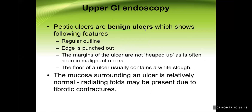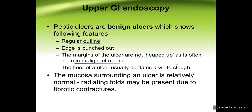Features of a benign peptic ulcer on endoscopy: regular smooth outline, punched-out edge, margins not heaped-up as in malignant ulcer, and a white slough on the floor. The surrounding mucosa is relatively normal, and radiating folds may be present due to fibrotic contracture in chronic cases. These features allow identification and distinction from malignant ulcer.